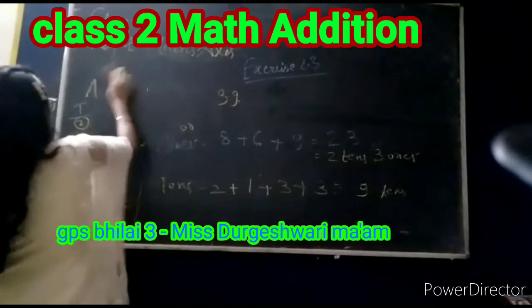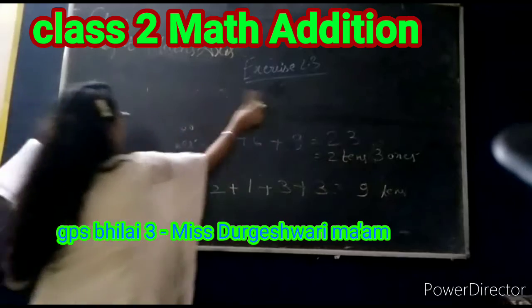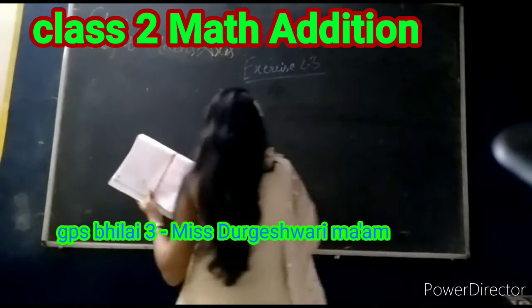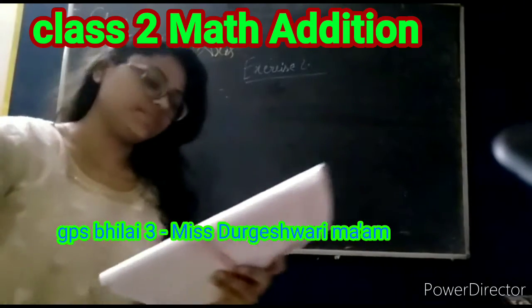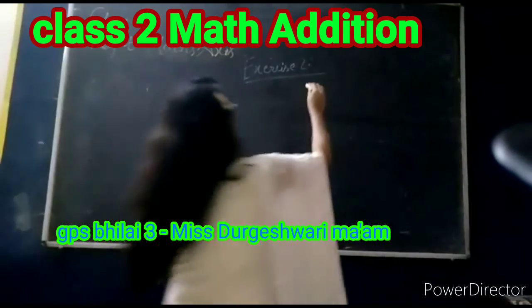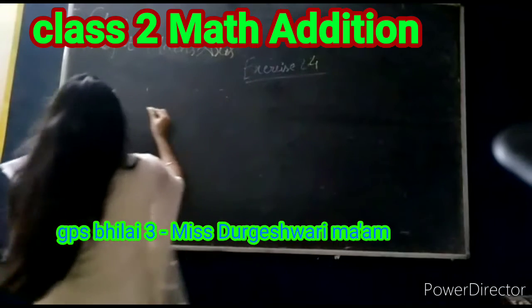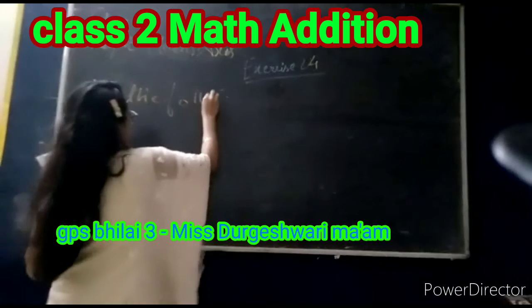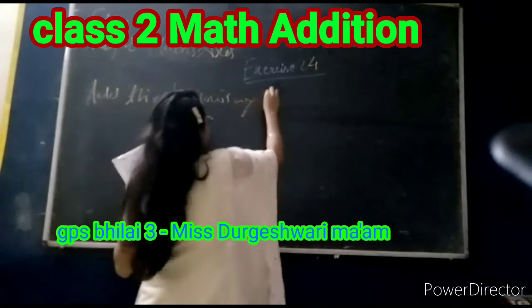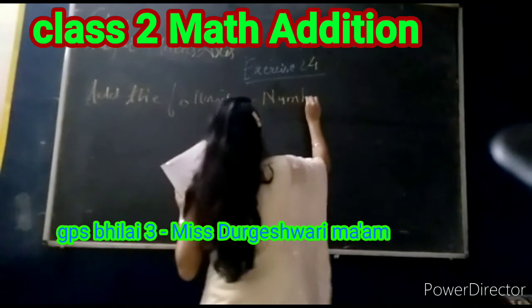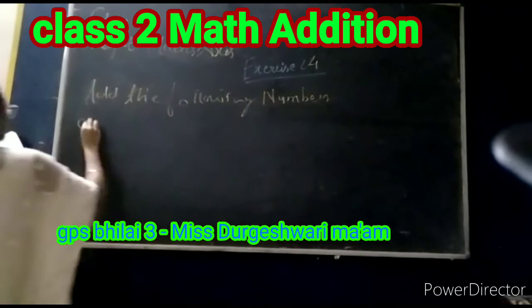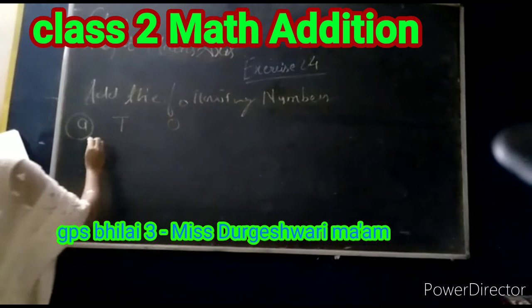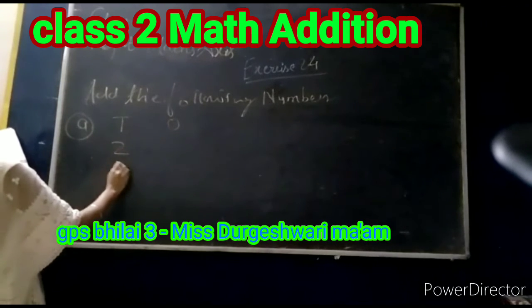Exercise 2.4 — add the following numbers. 8 plus 2 gives 10 tens. The answer will be 93.